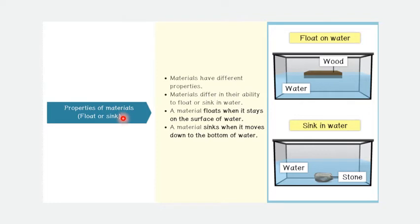Properties of material number two: Float or sink. Materials have different properties. Materials differ in their ability to float or sink in water. A material floats when it stays on the surface of water. A material sinks when it moves down to the bottom of water.